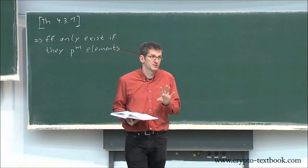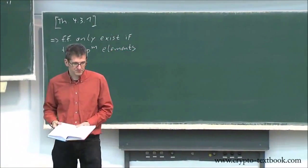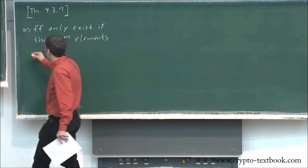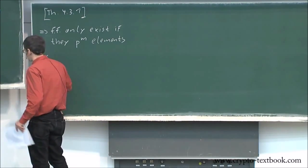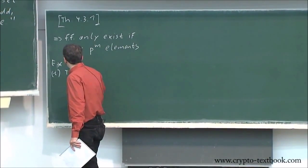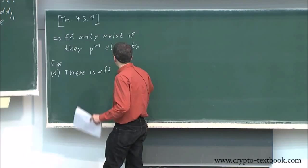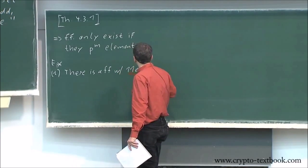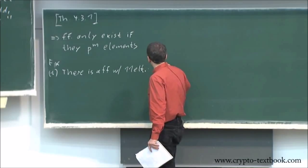This is a very strange statement, and I give you a few examples of what that means. Example: First example is there is a finite field with 11 elements, and we have a name for that. We call that GF(11), Galois field 11.